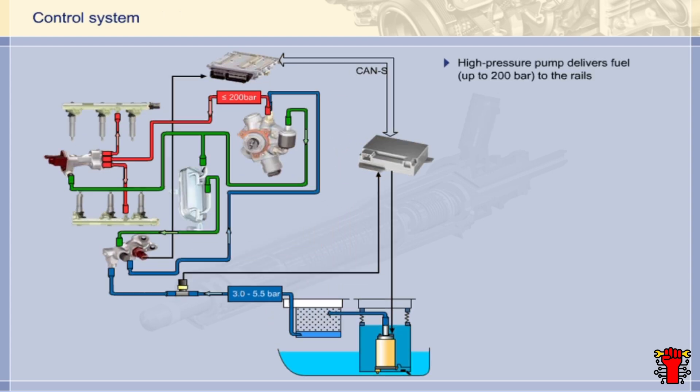Spray-guided direct injection requires a high fuel pressure of up to 200 bar. The high-pressure pump delivers fuel at the appropriate pressure to both rails via the high-pressure fuel supply rail. By the way, the stainless steel high-pressure lines must not be reused once they have been removed because the tightness of the joints can no longer be guaranteed.